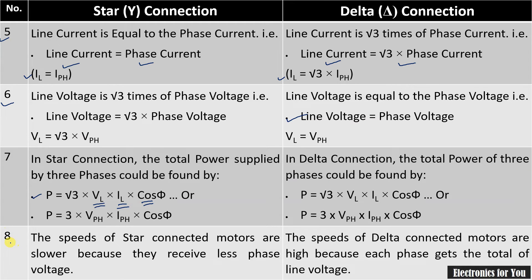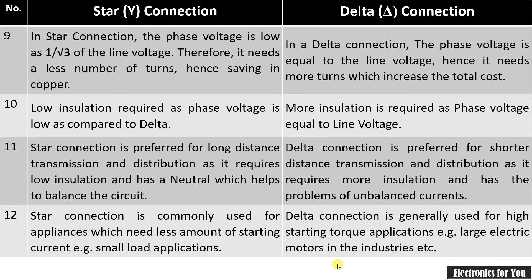The next point is about the speed of an induction motor. In case of star connection, the speed of the motor will be less because it receives less voltage — the phase voltage is actually less than the line voltage. Whereas in case of delta connection, phase voltage and line voltage are equal, so it gets high voltage and hence the speed of the motor in delta connection will be more.